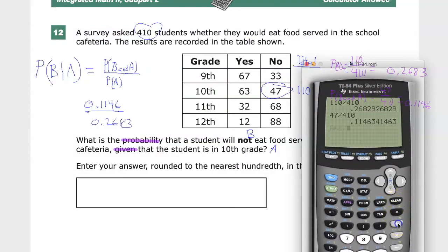I'm just going to divide by 0.2683 like I had before, and I get 0.427. It wants me to round to the nearest hundredth, so I'm just going to put in 0.43. So that is my answer for number 12.